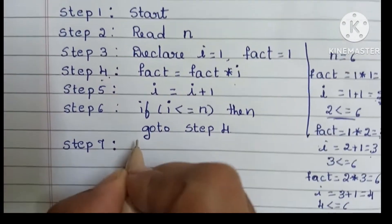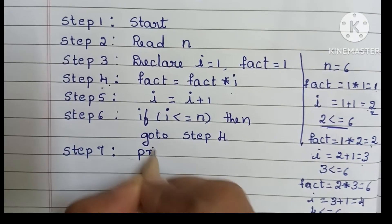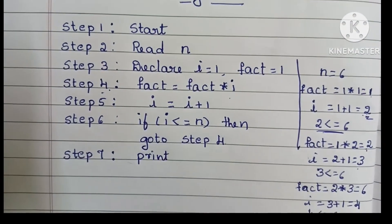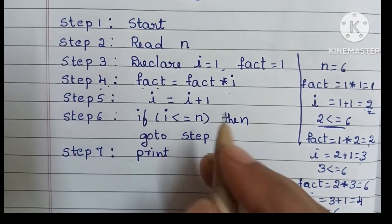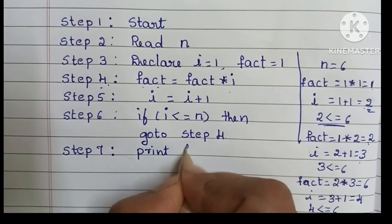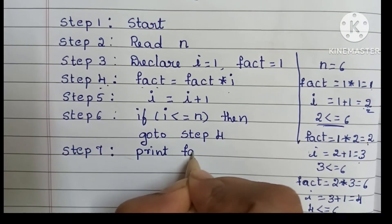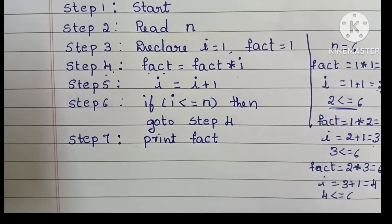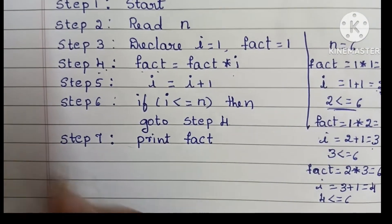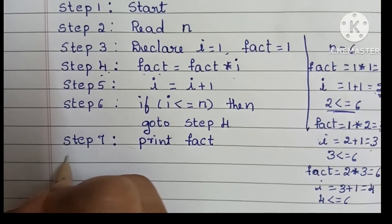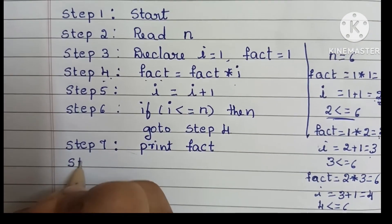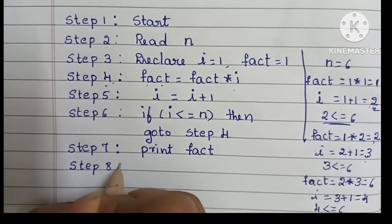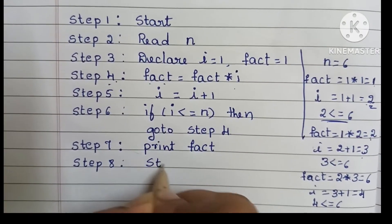In step 7 we print the factorial of the number, which is stored in fact — so we print fact. Next, in step 8 we stop the algorithm using the stop statement.